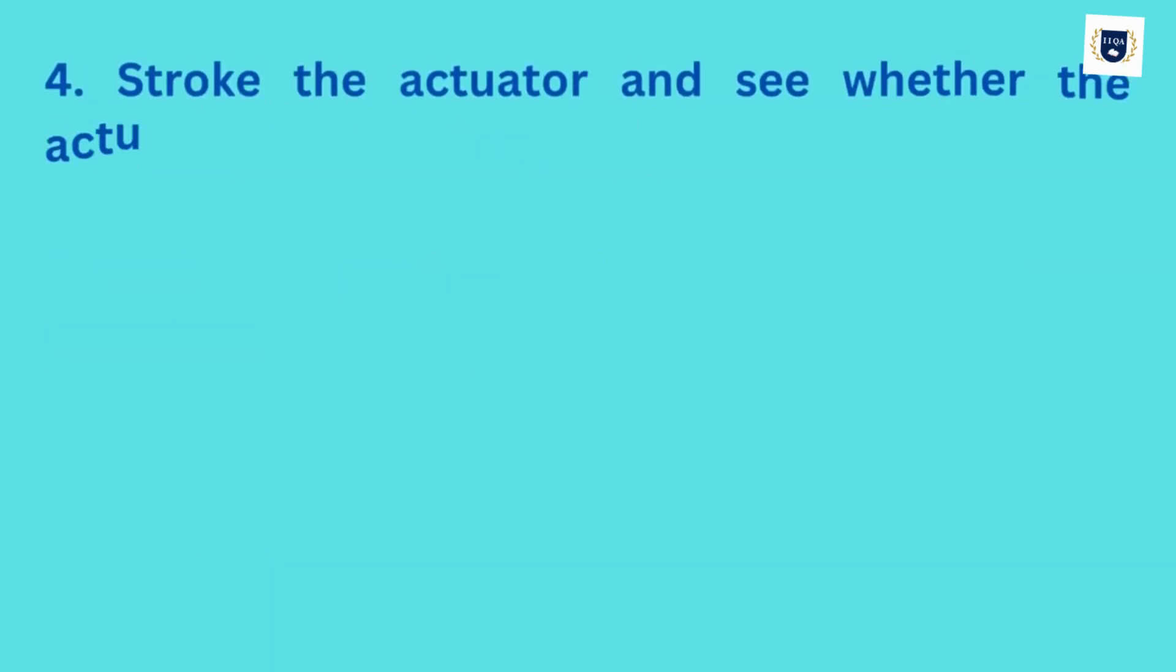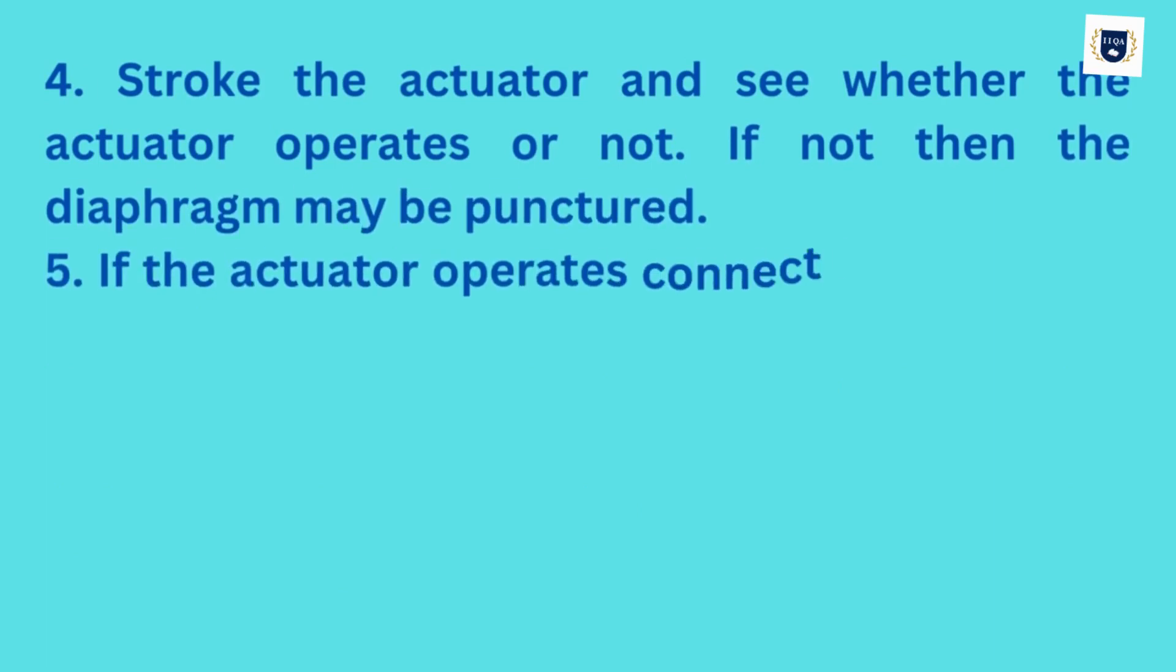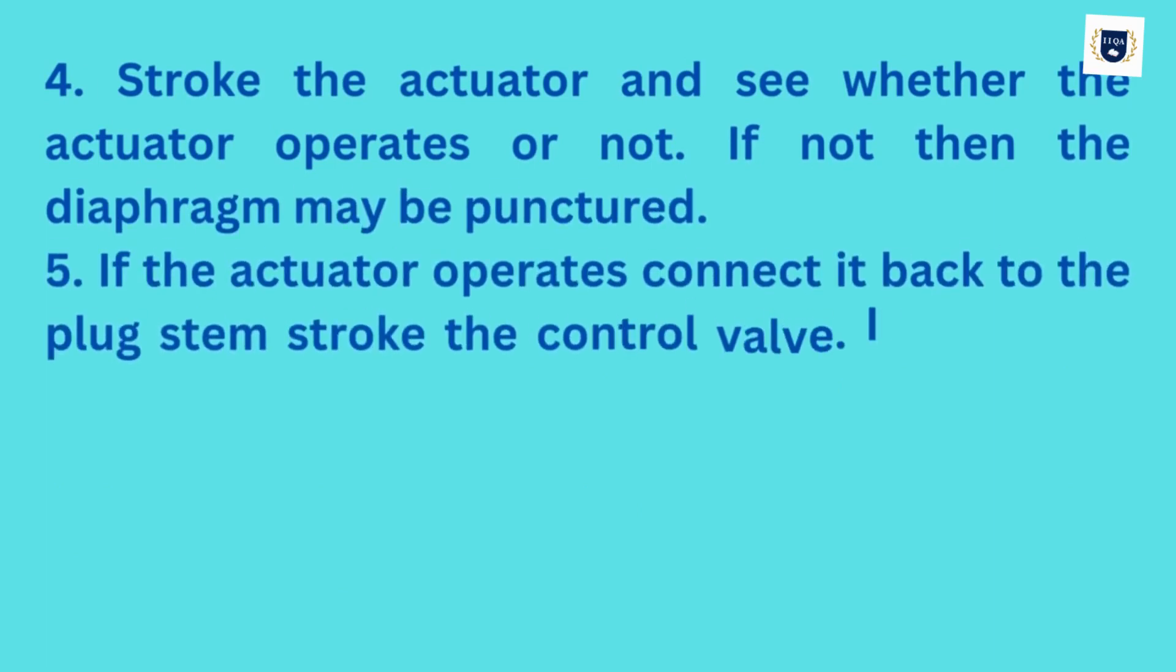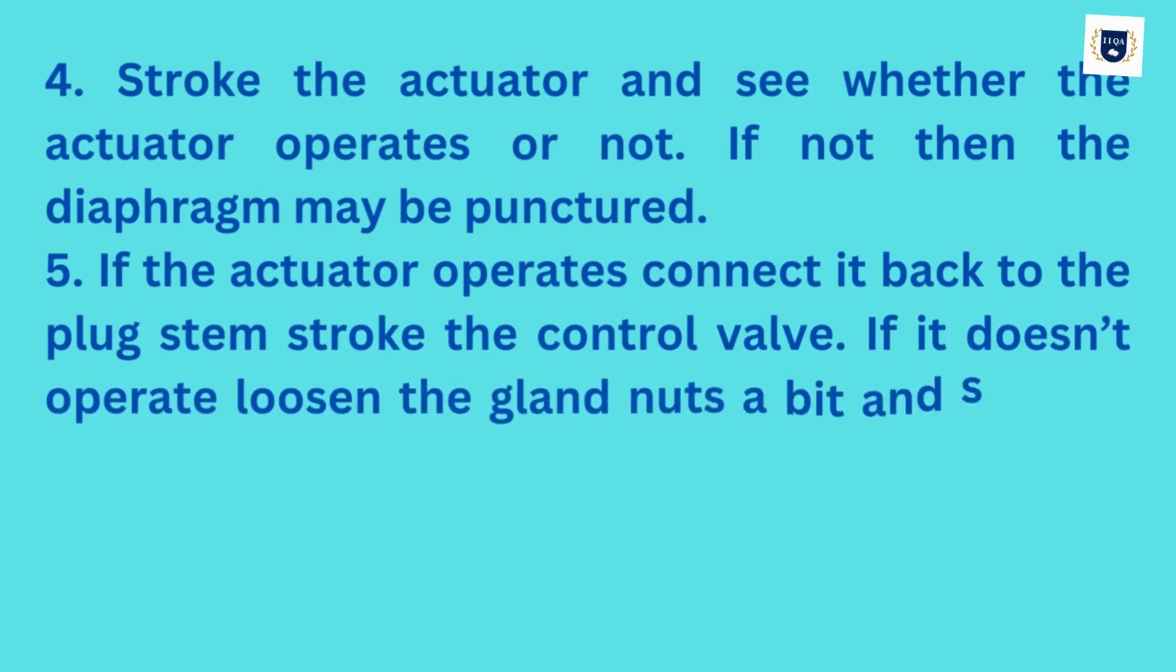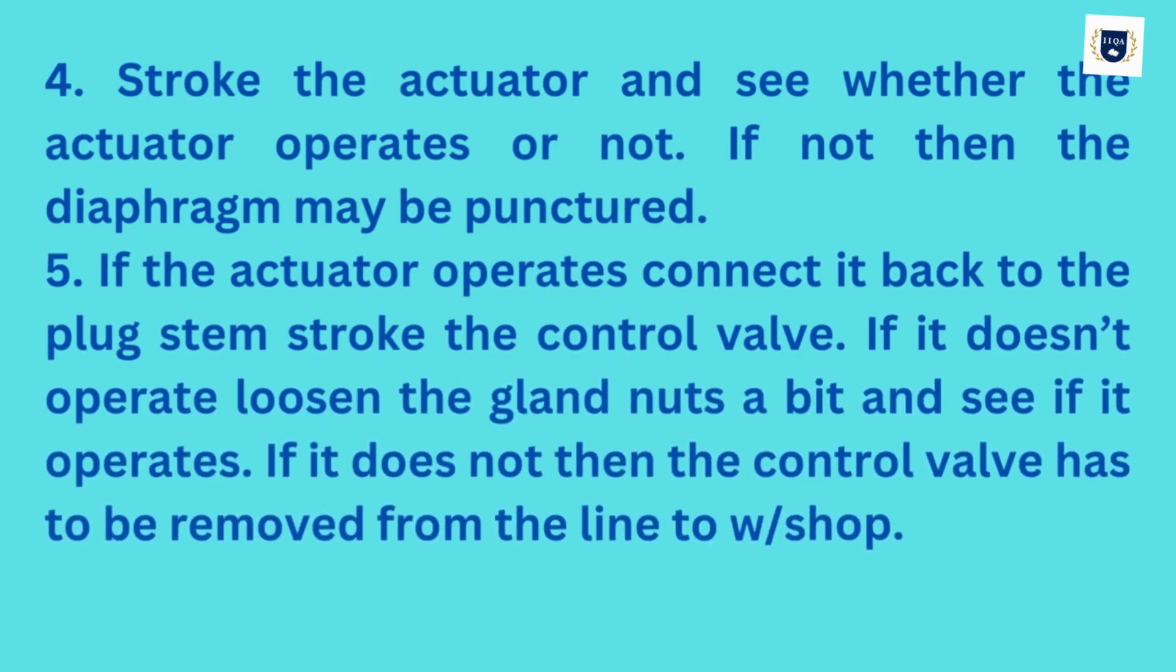Stroke the actuator and see whether the actuator operates or not. If not, then the diaphragm may be punctured. If the actuator operates, connect it back to the plug stem and stroke the control valve. If it doesn't operate, loosen the gland nuts a bit and see if it operates. If it does not, then the control valve has to be removed from the line to the workshop.